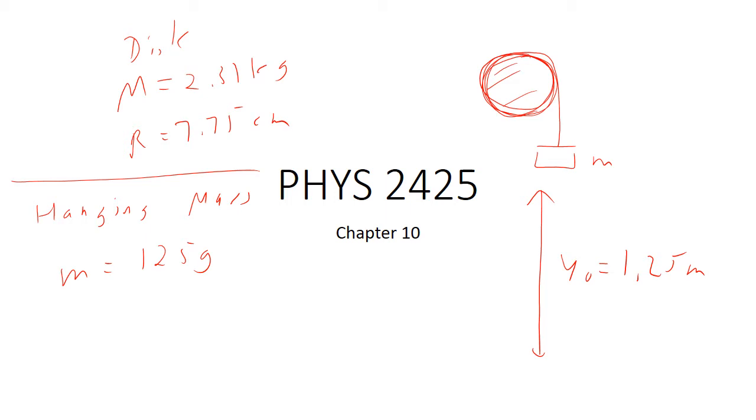Now this disk has an axle through the middle of it, so it's free to rotate around there without friction. And so what happens is that I let go of this. Gravity pulls down on this. The string starts unwinding. That thing's spinning. And so what happens is as this thing unwinds, this mass comes down. So I want to know two things here. I want to know what's the final velocity when it got to the bottom and how long did it take to get to the bottom?